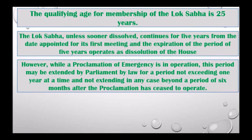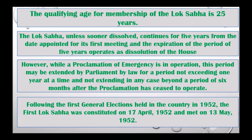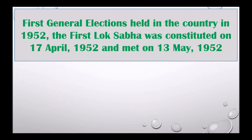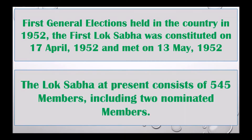However, while a proclamation of emergency is in operation, this period may be extended by Parliament by law for a period not exceeding one year at a time, and not extending in any case beyond a period of six months after the proclamation has ceased to operate. Following the first general election held in the country in 1952, the first Lok Sabha was constituted on 17th April 1952 and met on 13th May 1952. The Lok Sabha at present consists of 545 members, including two nominated members.